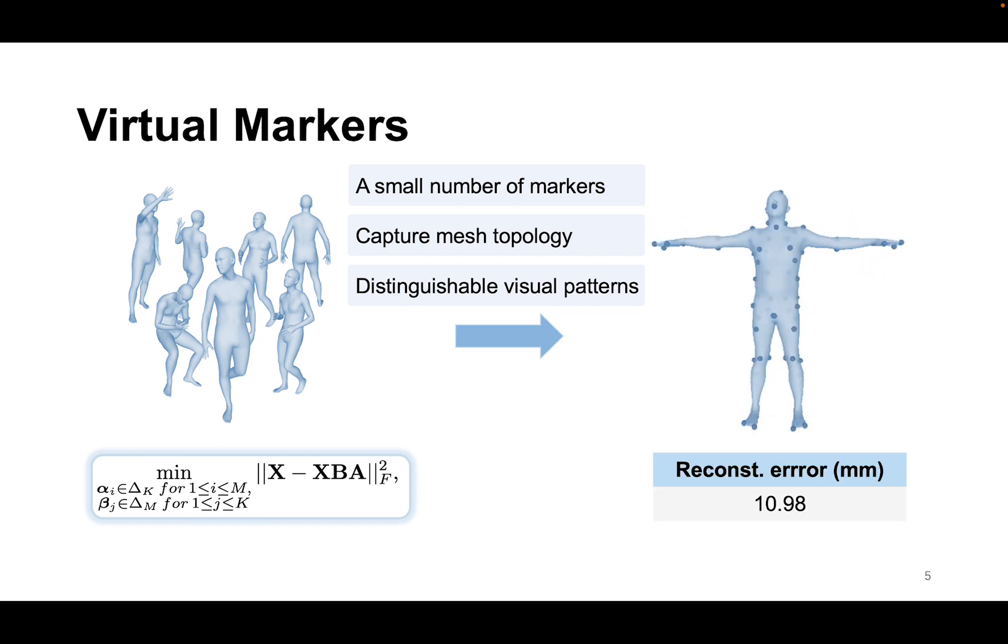Ideally, the learned virtual markers could reconstruct the whole mesh with sufficient accuracy, which paves the way for estimating meshes with accurate shapes. On top of the virtual markers, we present a simple yet effective framework for end-to-end 3D human mesh estimation from a single image. It consists of two branches.